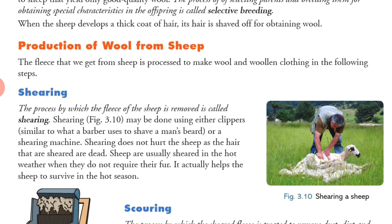Shearing is the first process. The process by which the fleece of the sheep is removed is called shearing. Shearing may be done using either clippers — similar to those a barber uses to shave a man's beard — or a shearing machine. Shearing does not hurt the sheep as the hairs that are sheared are dead.